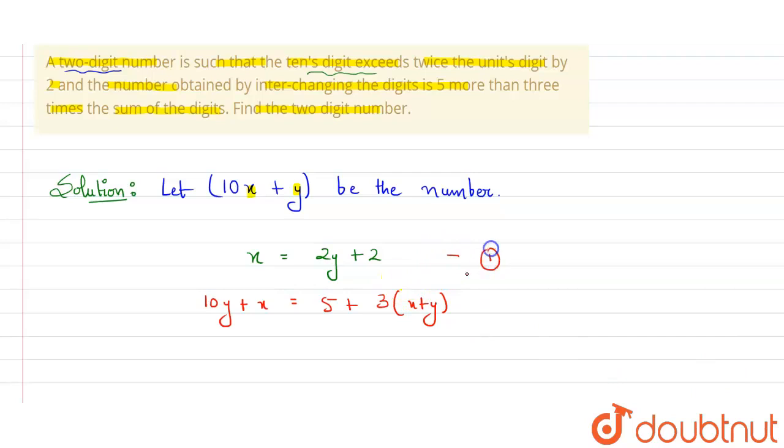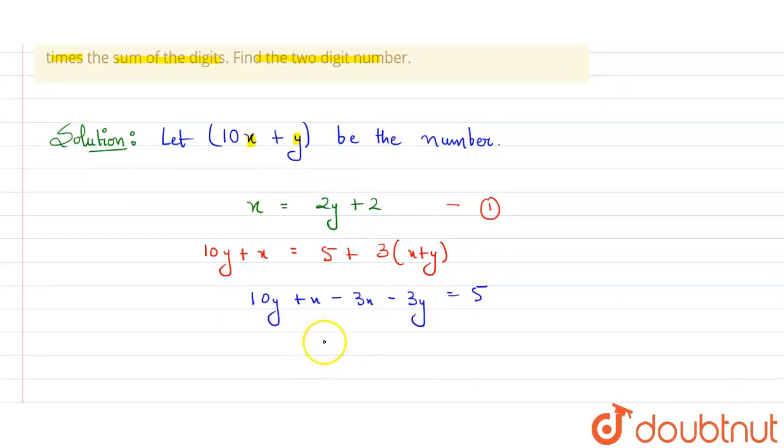Now mark this as equation 1 and simplify this. On simplification we will get 10y + x - 3x - 3y = 5. So on further simplification, considering like terms together, it will be 7y and minus 2x. So 7y - 2x = 5. Mark this as equation number 2.